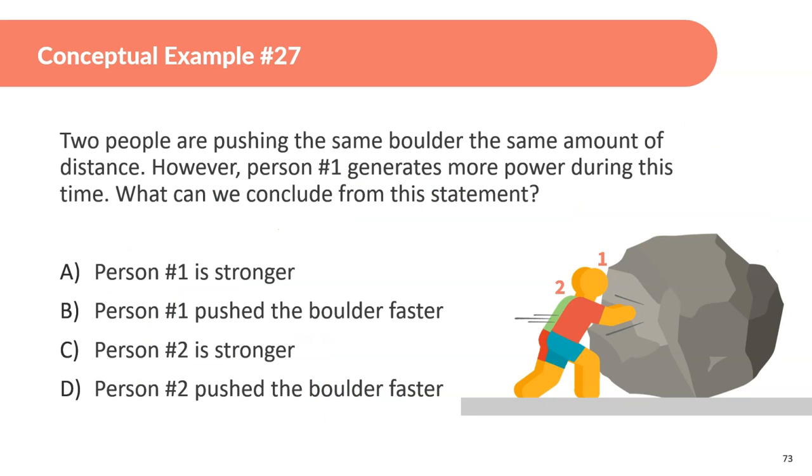Conceptual example 27. Two people are pushing the same boulder at the same amount of distance. However, person 1 generates more power during this time. What can we conclude from this statement? A, person 1 is stronger. B, person 1 pushed the boulder faster. C, person 2 is stronger. D, person 2 pushed the boulder faster. We definitely can't conclude who is stronger or not. But, if they both push the same boulder at the same amount of distance, person 1 generates faster. That means that even if they did the same amount of work, person number 2 must have done it in a shorter amount of time. So, must have done it faster. B. I hope that makes sense.